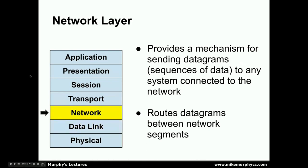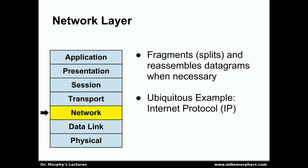Above the data link layer, we have the network layer, which is an abstraction mechanism to provide a means for sending datagrams or sequences of data to any system connected to the network. These systems do not need to be on the same network segment. If there are multiple segments, it is the network layer's responsibility to route datagrams between those different segments. It is also sometimes necessary to split and reassemble datagrams because the underlying data link layer can only handle messages of a certain size — the network layer performs this fragmentation and reassembly. The ubiquitous example of the network layer is the Internet Protocol, or IP.